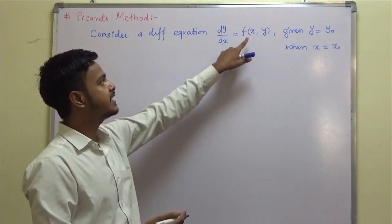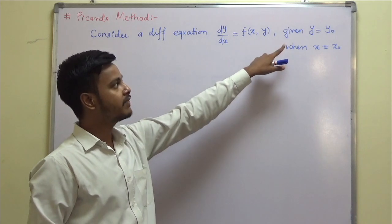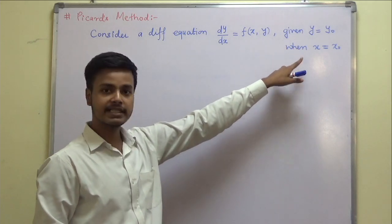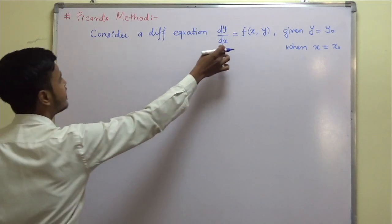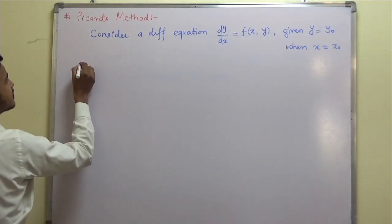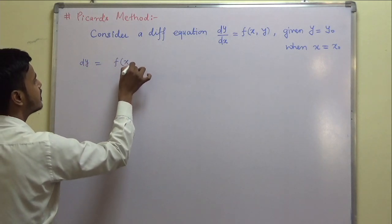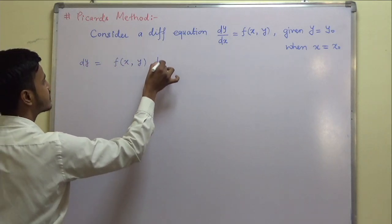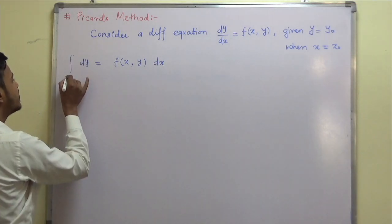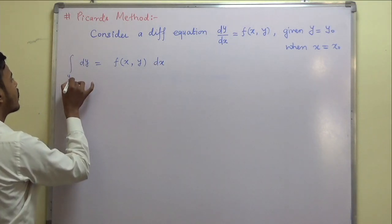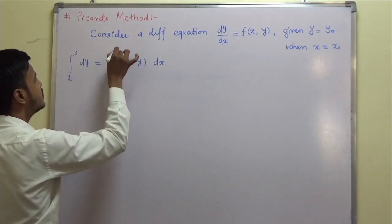We are given dy/dx = f(x, y), with initial condition y(x₀) = y₀. I can write this equation as dy = f(x, y) dx. Now I am going to integrate this from limit y₀ to y on the left, and x₀ to x on the right.